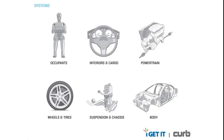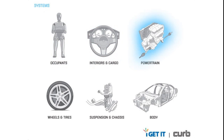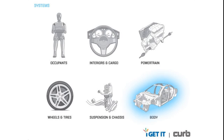Every package is comprised of the same group of systems. These will vary greatly depending on the functional objectives of the vehicle. Generally speaking, these are broken into six groups. These include the occupants, the interiors and cargo, the powertrain, the wheels and tires, suspension and chassis, and the body.